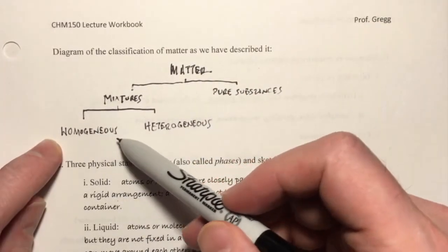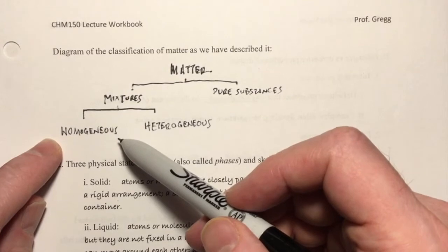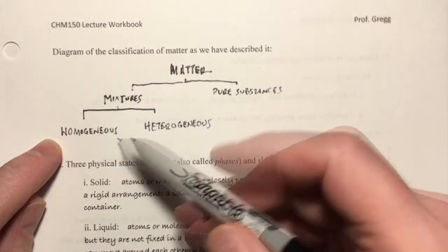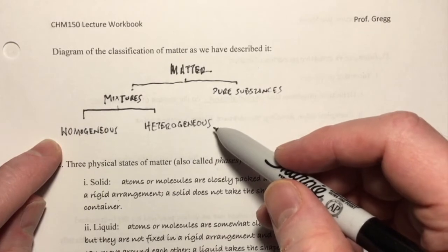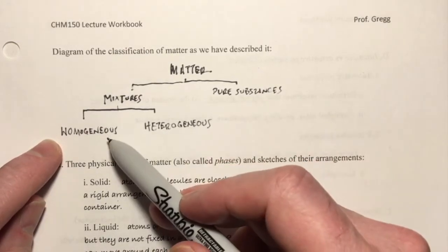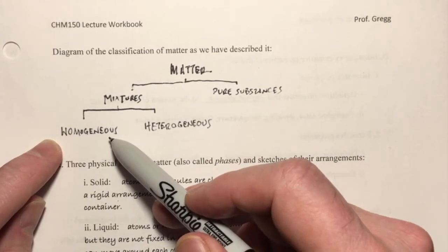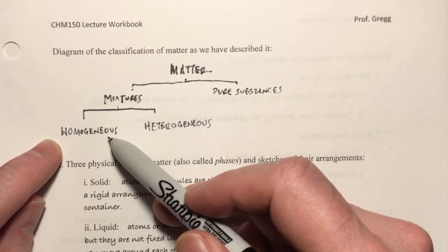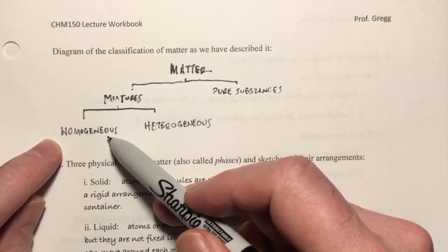And just to recall, homogeneous mixture, that means that the mixture has a uniform composition throughout. And heterogeneous mixtures have different compositions throughout. So for example, a homogeneous mixture would be a glass of salt water, where you can't see any salt floating around it, all the salt's been dissolved. So all the salt is a fairly uniform consistency throughout the mixture.